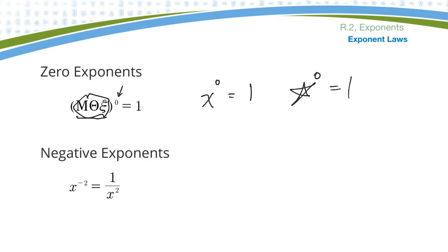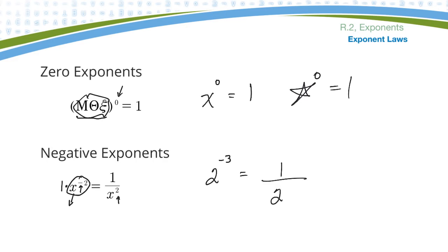If I have negative exponents, typically that's taboo. When you simplify an expression, you must not have negative exponents in it. The way you can get rid of negative exponents is to change them to the opposite side of the fraction line, and then you can make it positive. So here I have one times x to the minus two. I can move it to the bottom of the fraction, and the exponent instead of minus becomes positive. Say I have two to the minus three — that would be the same as one over two to the positive three.